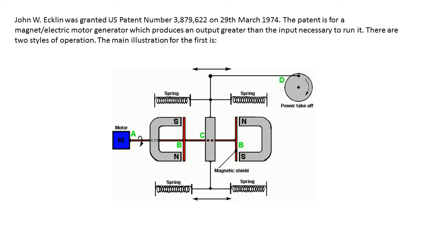John W. Eklund was granted US patent number 3879-622 on 29th March 1974. The patent is for a magnet electric motor generator which produces an output greater than the input necessary to run it.